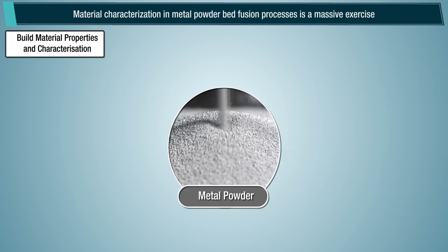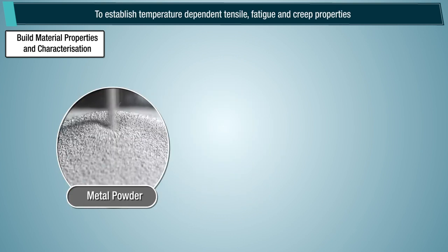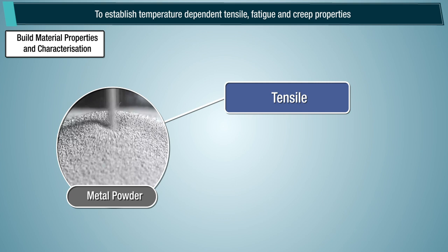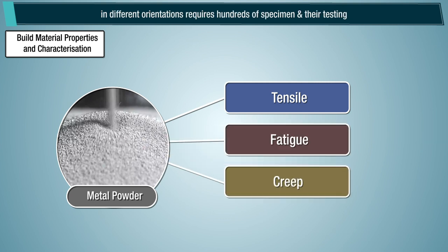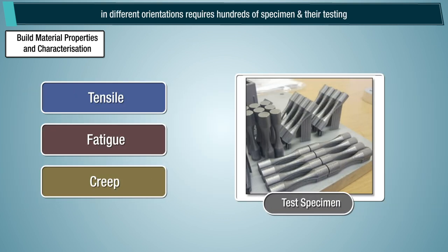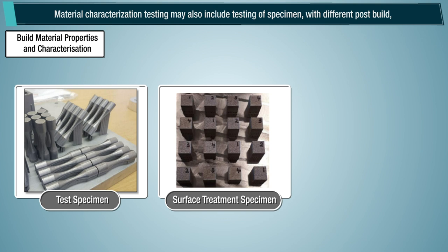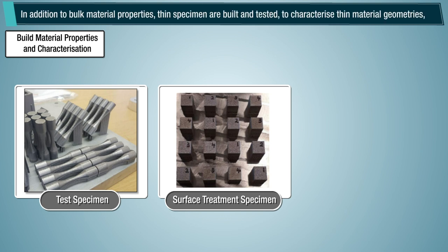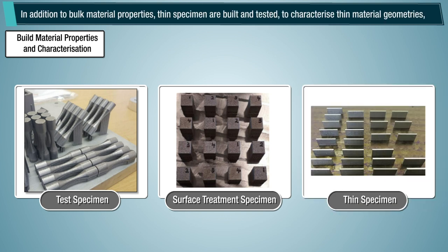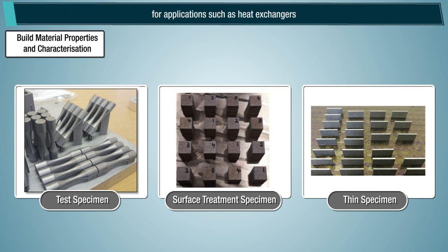Material characterization in metal powder bed fusion processes is a massive exercise. To establish temperature-dependent tensile, fatigue, and creep properties in different orientations requires hundreds of specimens and their testing. Material characterization testing may also include testing of specimens with different post-built heat and surface treatment conditions, to analyze their effect on final properties. In addition to bulk material properties, thin specimens are built and tested to characterize thin material geometries for applications such as heat exchangers.